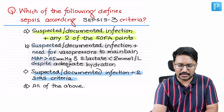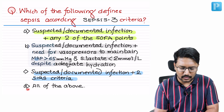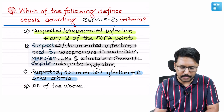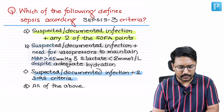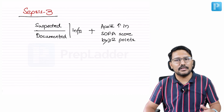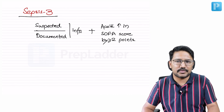The last option is something we can confidently rule out. We have to pick one between the first three options. Let us see how we define sepsis according to Sepsis-3.